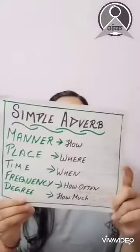Let's move on to your fifth type of adverb: adverb of degree. A word that shows how much work is done. Like very, much, quite, and so on. For example: 'I am quite well.'